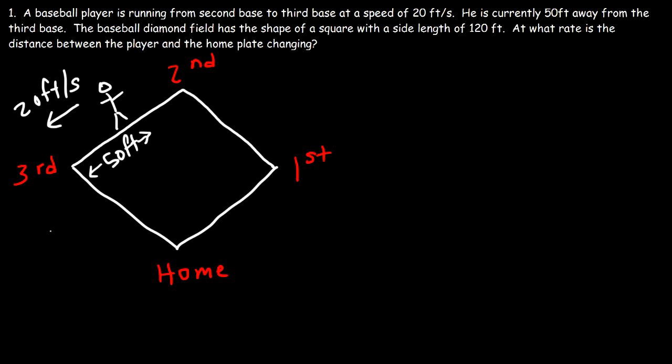Now the baseball diamond field is the shape of a square and the side length is 120. So this is 120, this is 120. Every side of this field is 120. So the distance between the home plate and third base is 120 feet.